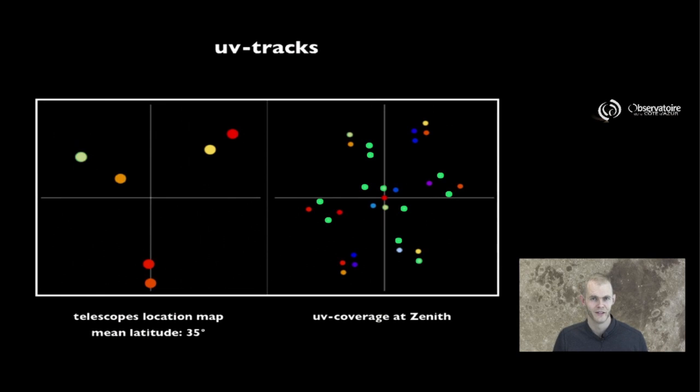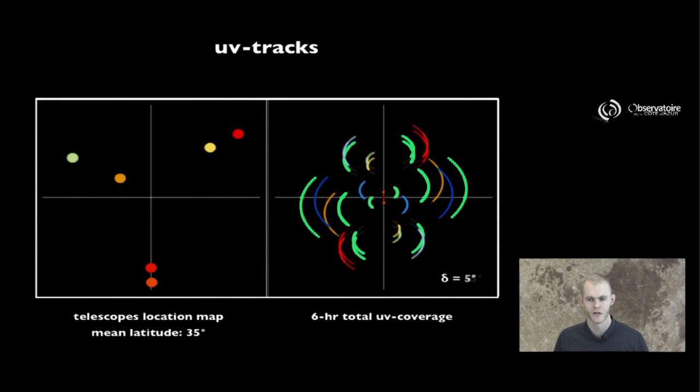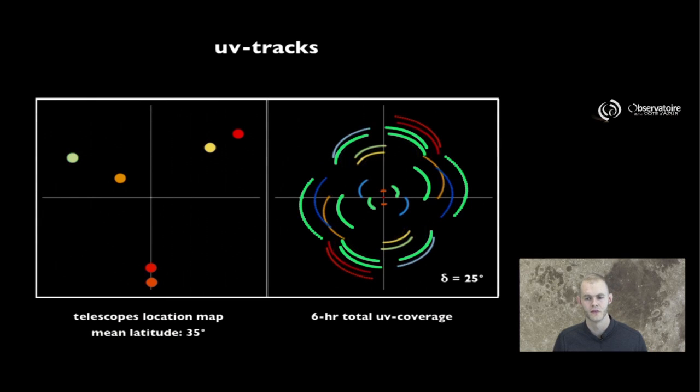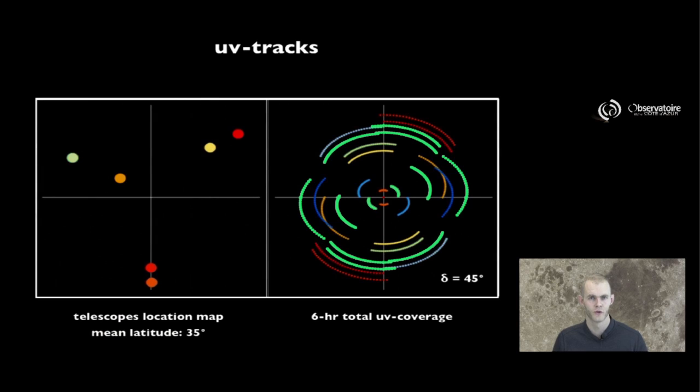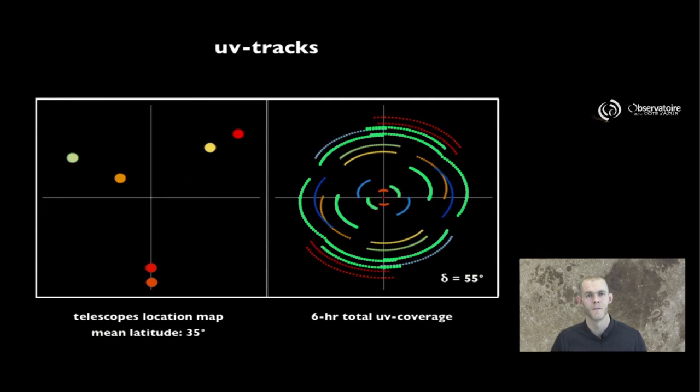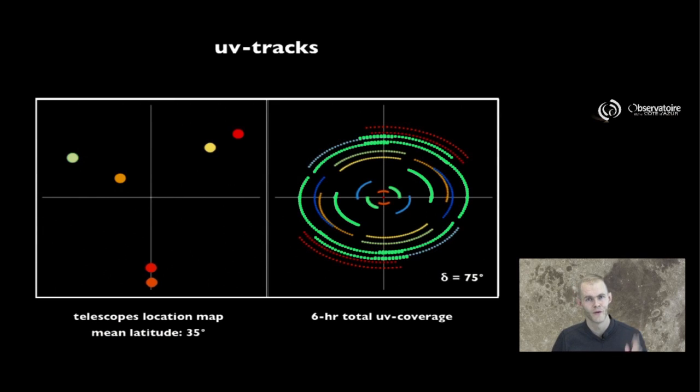We're going to place that interferometer at a latitude of about 35 degrees, which roughly corresponds to the latitude where the Chara array is located. We're going to look at the shape of the UV tracks for an object located at different declinations. We're looking at the tracks for an observation that covers six hours. We progressively go from a negative declination to 15, then 25, and a declination that matches the actual latitude of our interferometer, and keep progressing further away. We observe that we get significantly different behaviors for our UV tracks, depending on whether we observe away from the north or toward the north.